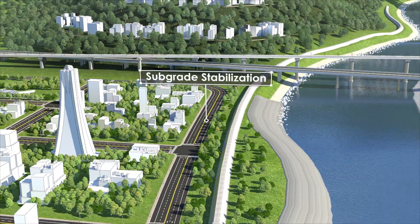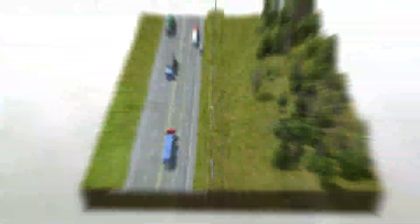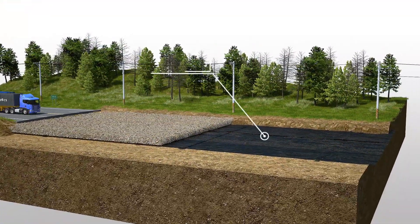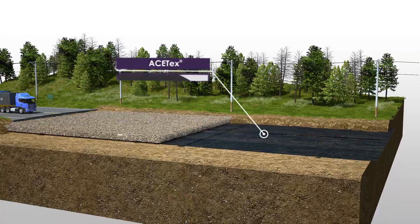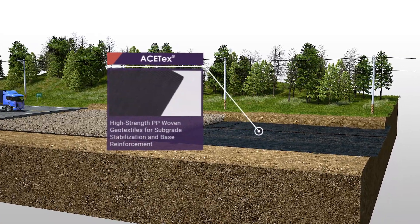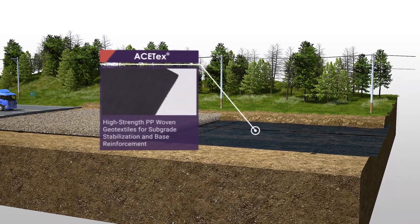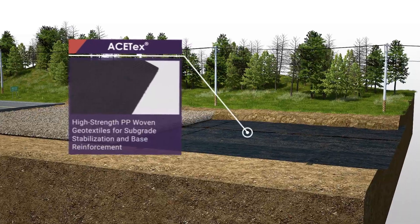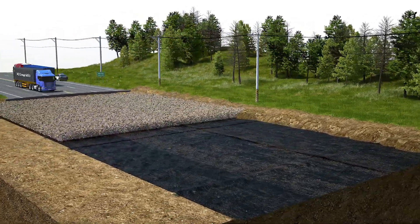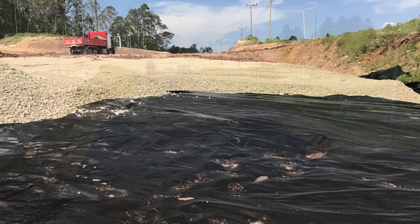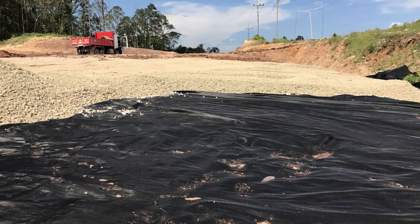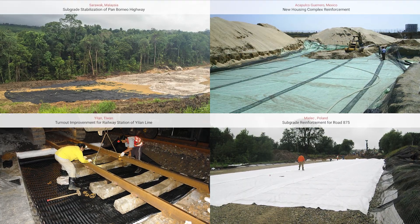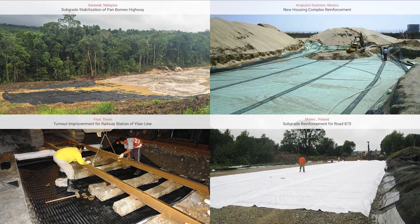Subgrade Stabilization: ACE-TEX geotextile laying between the subbase and the subgrade will perform exceptionally well in separation and reinforcement functions at the same time for pavement stabilization. With the excellent filtration characteristics and tensile strength of ACE-TEX, the bearing capacity and service life of the road can be greatly improved.